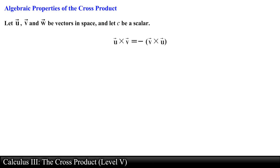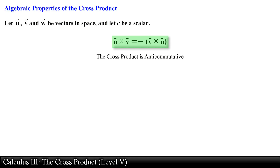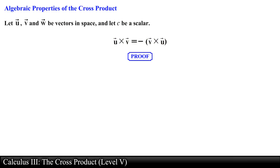Vector u crossed with vector v is equal to the negative of vector v crossed with vector u. In other words, the cross product is anti-commutative. This property tells us that both vectors have the same length but opposite directions. This and subsequent properties can be proved by writing the vectors in terms of their components and using the component definition of the cross product.